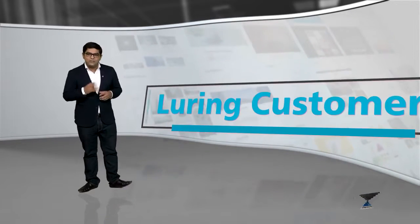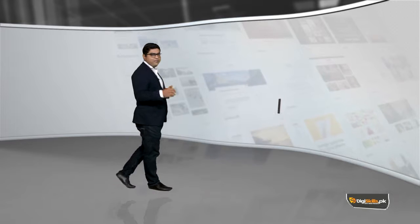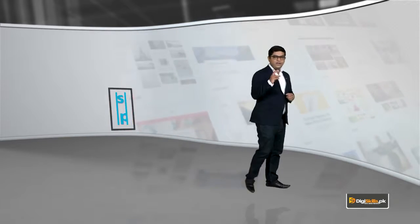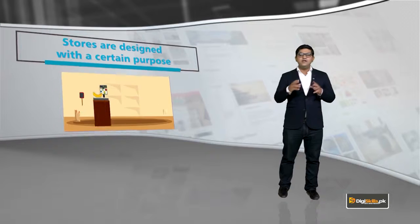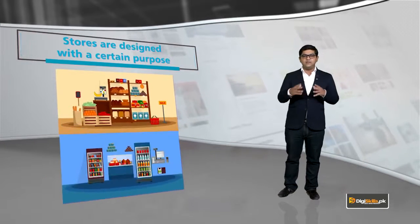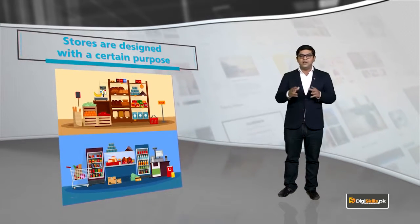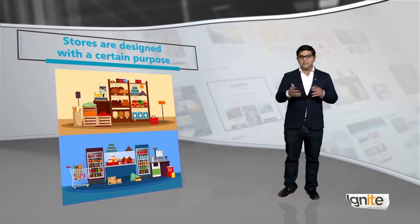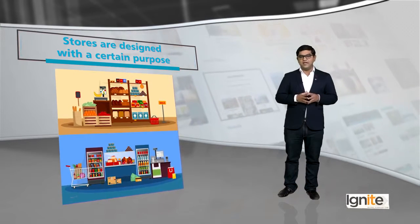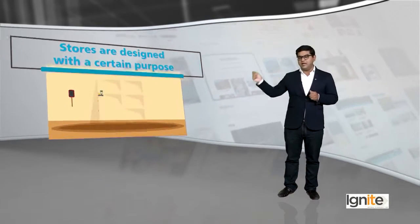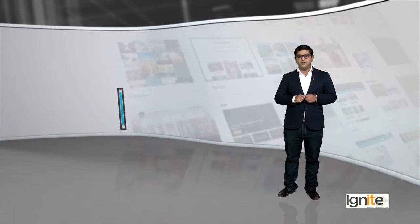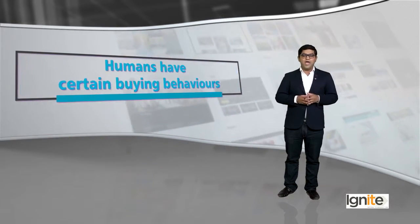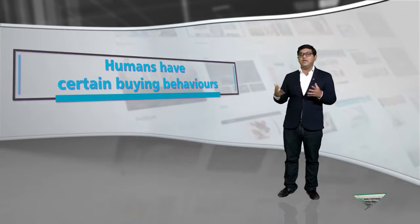I will try to give you a few examples of this. Jab bhi aap dukaan pe jate hain, jab bhi aap market pe jate hain, aapko pata hain that stores are designed with a certain purpose. Aapko nazar aayega ke toffees jo hain, woh hamisha counter pe padi hoti hain. Biscuits jo hain, woh hamisha ek side drawer pe padi hoti hain. Aisa kyun hain? Because humans have certain buying behaviors.